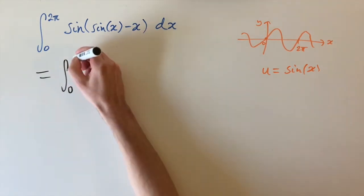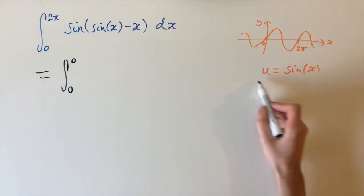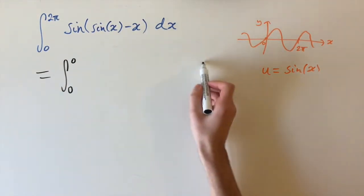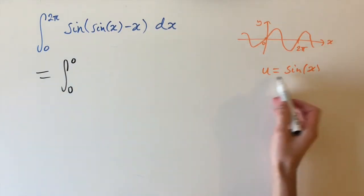We know that at 0 and 2π, sin(x) equals 0. So our limits are just going to be 0 and 0, which is really helpful because if we can convert this integral in terms of only the variable u, then we know that our answer is going to be 0 because the limits are the same.